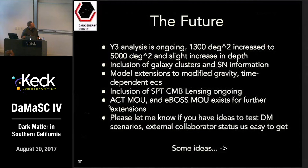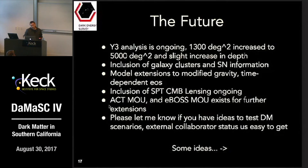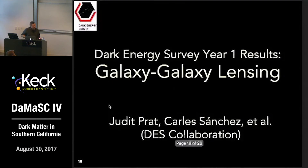For the future of DES, the year three analysis is ongoing. We will increase from 1,300 square degrees to 5,000 square degrees covering the whole footprint, with a slight increase in depth. We will include galaxy clusters and supernova information, which should give a big boost, and we will include SPT CMB lensing properly in the multi-probe analysis. We also have MOUs with ACT and VVDS for spectroscopic data. If you have ideas to test dark matter scenarios, it is quite easy to get external collaborator status.